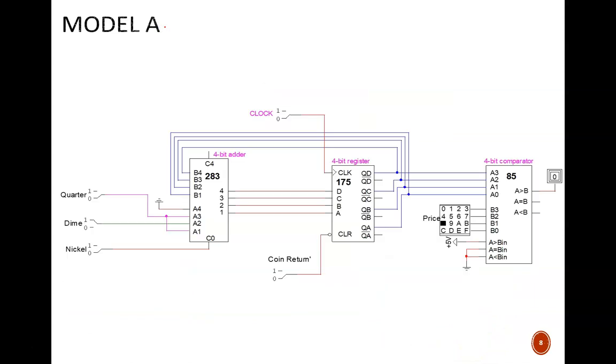Here is the completed Model A. Pause the video for a couple minutes and explore the new connections before I continue on to explain them. First, note that we took the cop-out approach for the register clock. This switch requires us to manually flip the clock up and down to add in a new coin. Obviously, a real vending machine would not have this cumbersome feature. We'll correct this in later models.